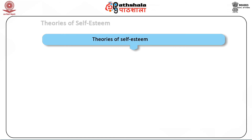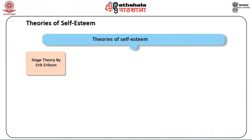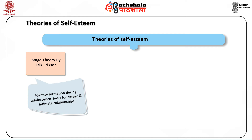Many theories have been proposed on the concept of self-esteem. One influential theory on how self developed was given by Eric Erikson, who argued for a stage theory of ego development. He maintained that although identity formation is a lifelong task, it is of critical importance during adolescence and young adulthood — a time that marks the transition between childhood and adulthood. This identity provides a basis for making career plans and for establishing intimate relationships.